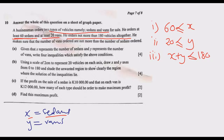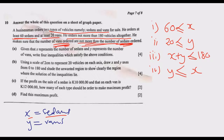Lastly, the number of vans ordered must not be more than the number of sedans. So x, the number of sedans, should always be greater than or equal to y, the number of vans. This gives us inequality four: y ≤ x. The maximum they can be is when they are equal. So these are the four inequalities we need.